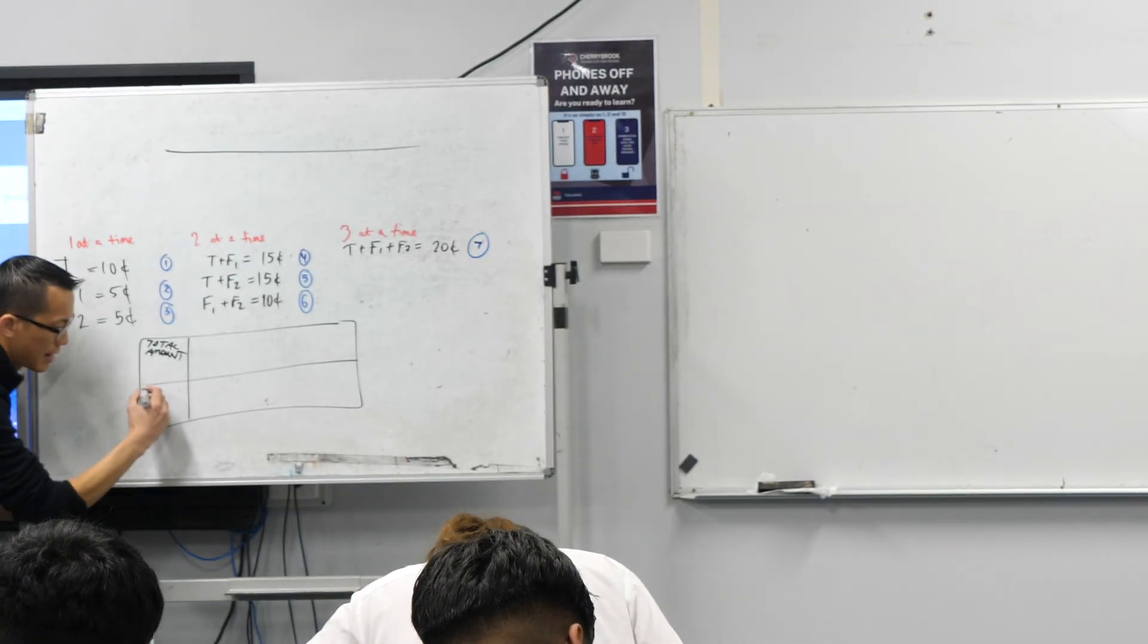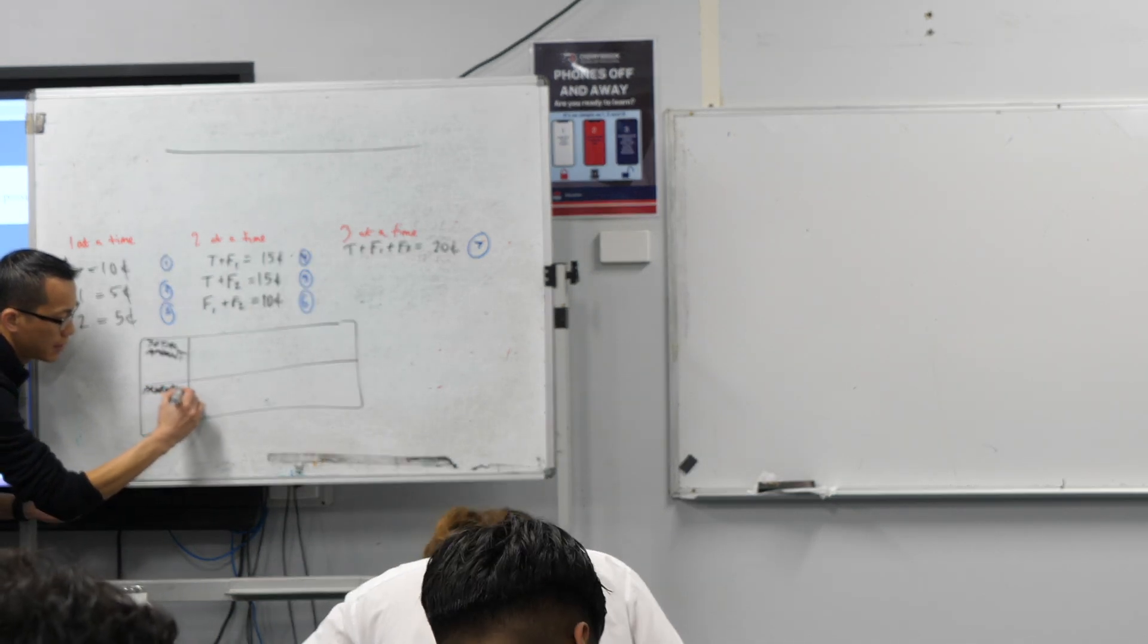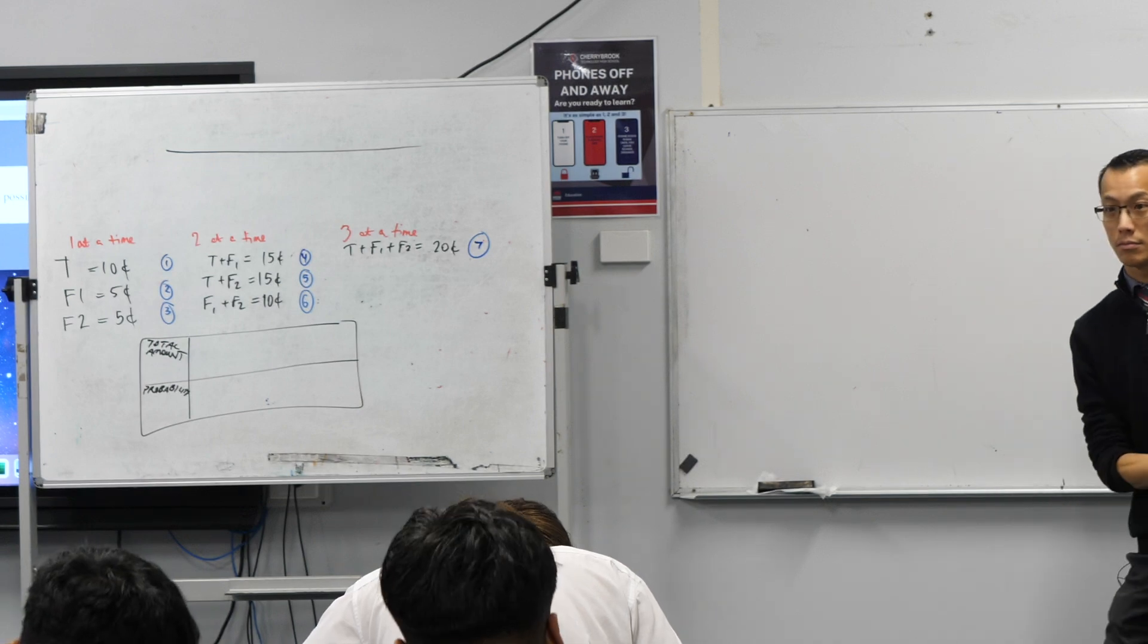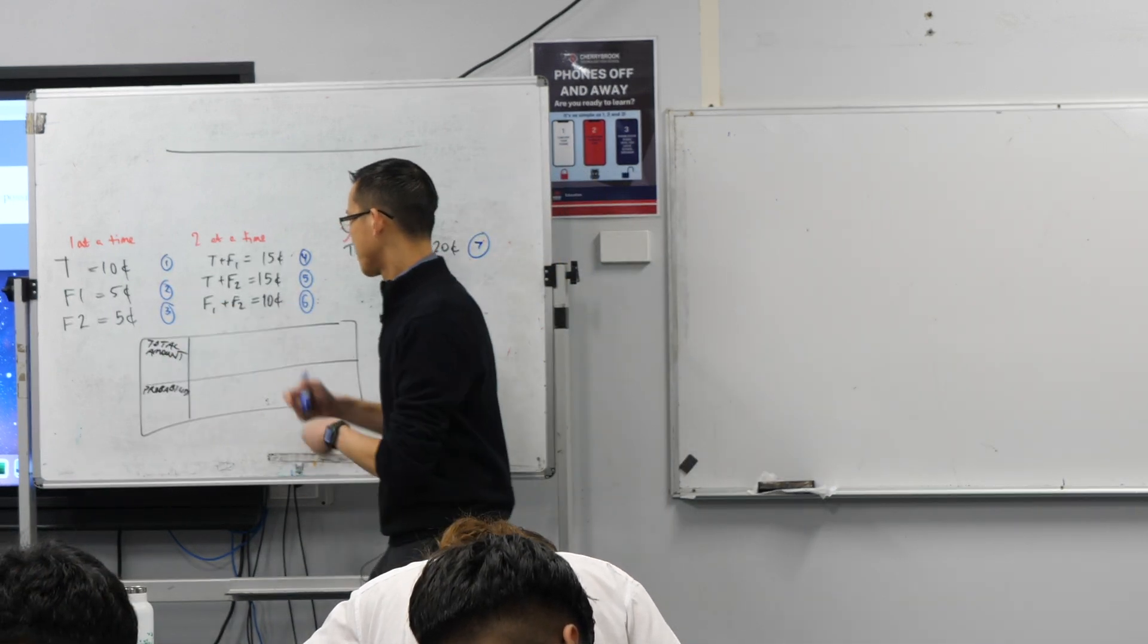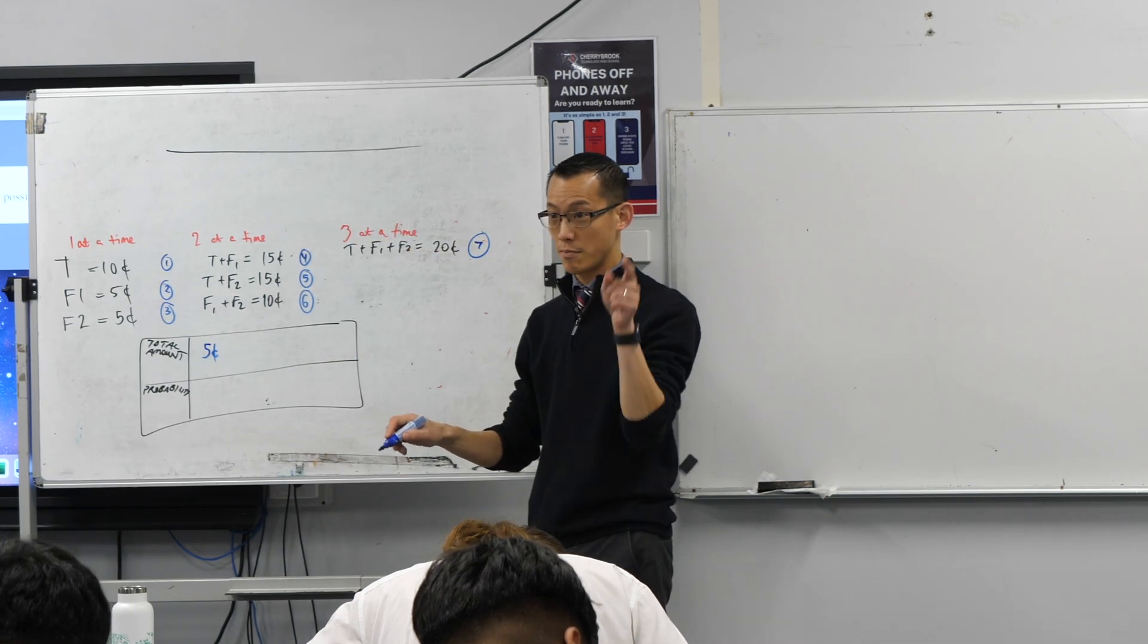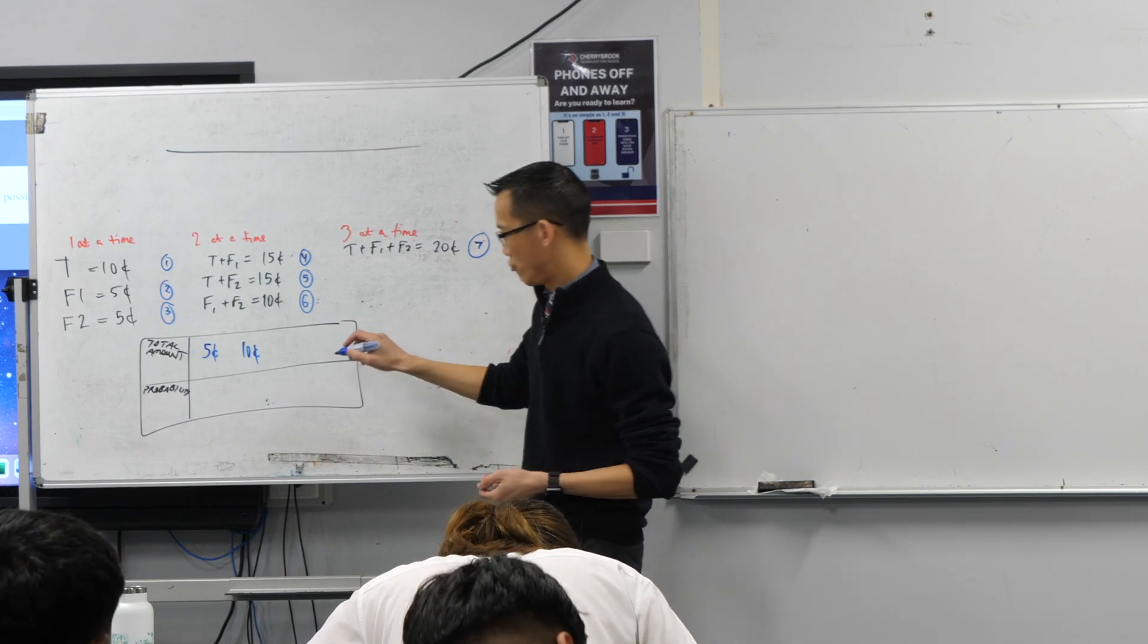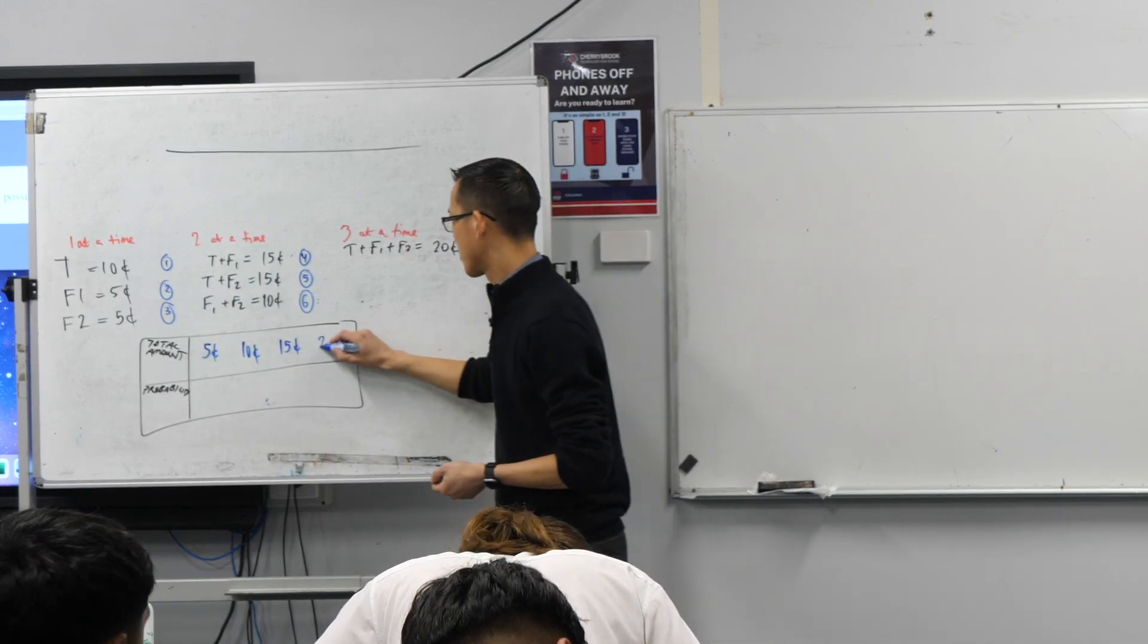Down here. And then what I want to write down in the bottom is what's the probability of getting that particular total amount. So have a look at our seven different options. What's the smallest possibility? Five cents. Right here. Five cents. Next. Next biggest. After five cents, we can get the next biggest up is 10. What about after that? 15. And then 20. Great.